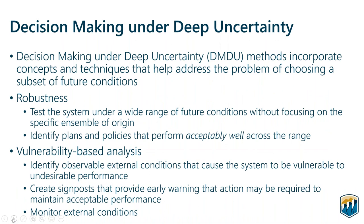But it doesn't mean we're hopeless — it just means we need to look for different types of information to support planning. That's where decision-making under deep uncertainty, or DMDU, methods come into play. They incorporate concepts and techniques that help address the problem of how we can choose a set of assumptions, and they also help address the fact that we have multiple planning objectives and multiple perspectives in this basin. The first important concept is robustness: we want to test the system under a wide range of future conditions, regardless of which ensemble they came from, and identify plans and policies that perform acceptably well across that range. They're unlikely to be optimal for any subset of hydrology, but the point is we want to be okay across a wide range of futures.